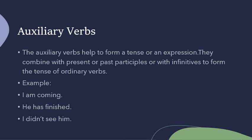There are a few examples. I am coming. He has finished. I didn't see him. In all these three sentences, we have the helping verbs am, has, and did in the negative form, followed by the main verbs: coming, finished, see.